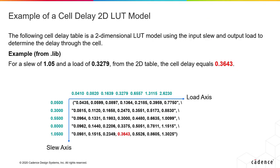This is an example of a 2D lookup table model shown in a visually understandable table. In the example, the slew is plotted on the Y axis and the load is plotted on the X axis. For example, for the slew of 1.05 and for a load of 0.3279, it's showing 0.3643. You would determine that based on the lookup table, and that's what the tool will also do.